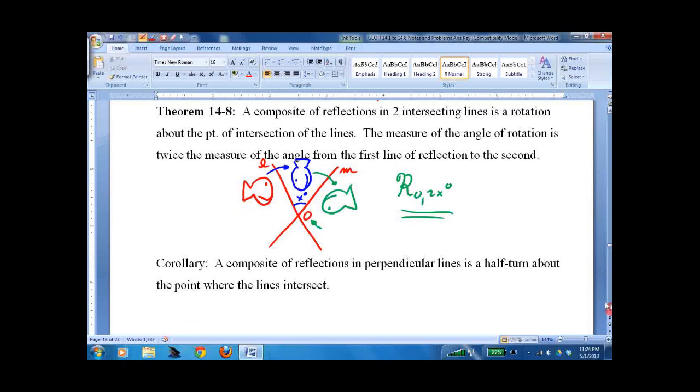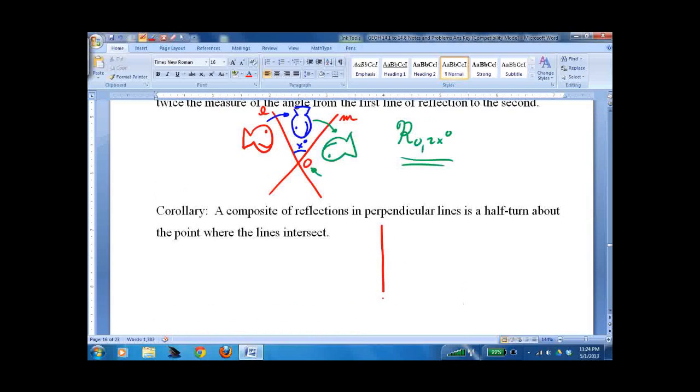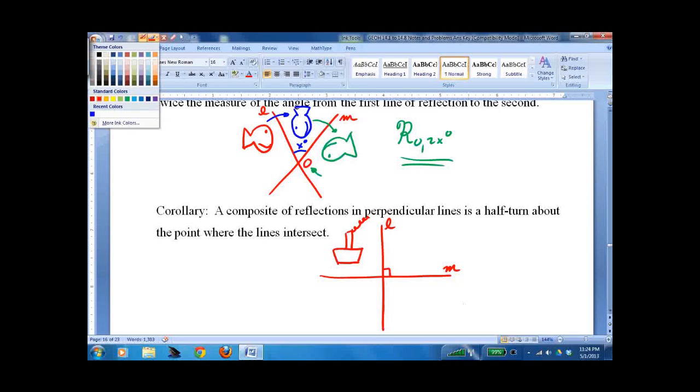One last one. If those lines are perpendicular. And we have a shape up here. I'll give us a boat. And we'll go with L and M again. We reflect through L. So that reflects there. And then we reflect it again. Through M.